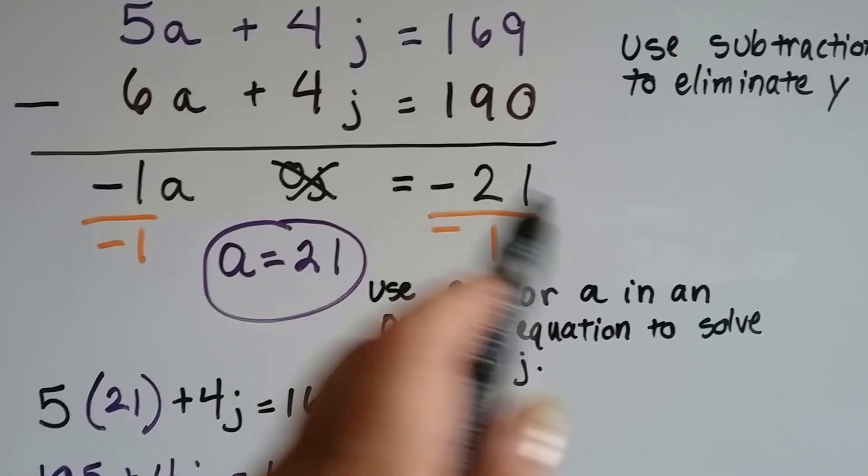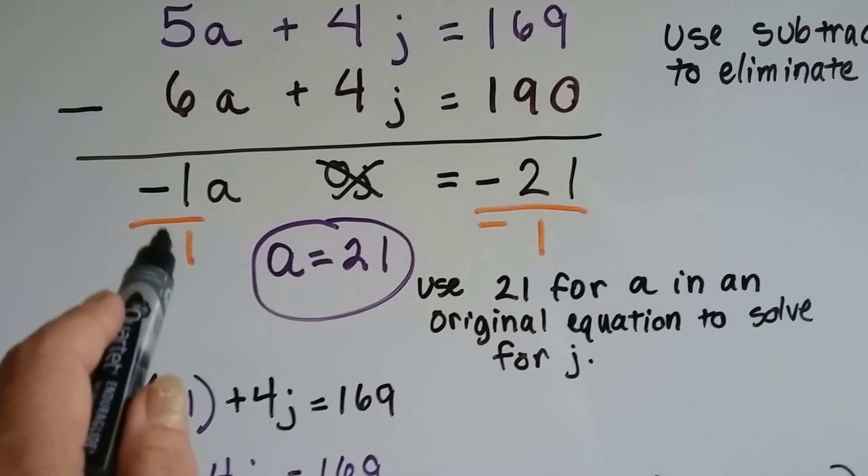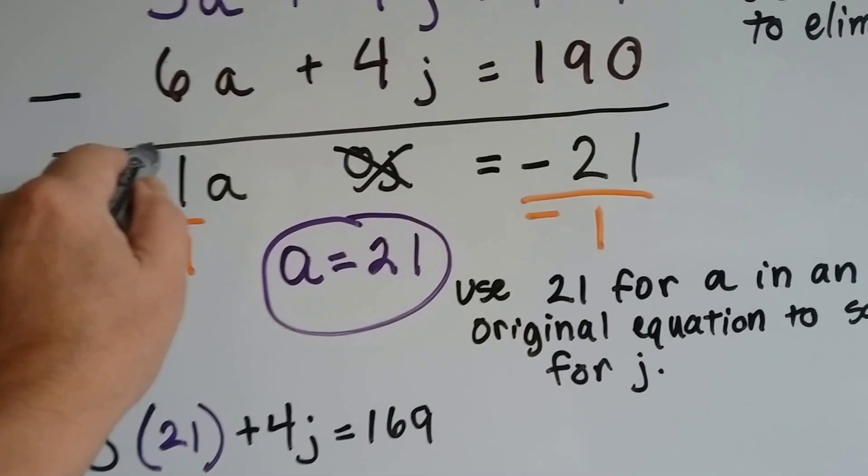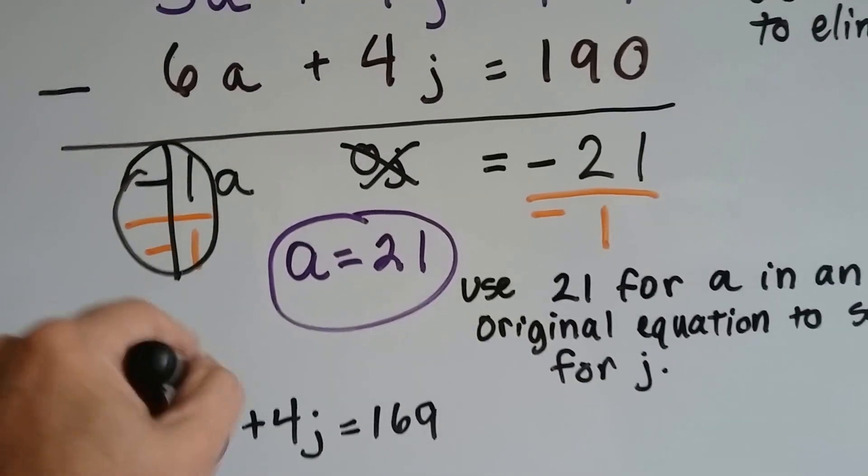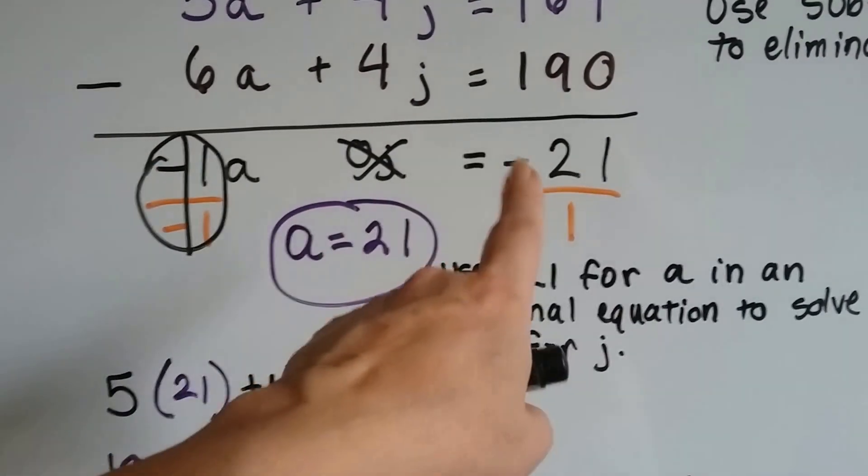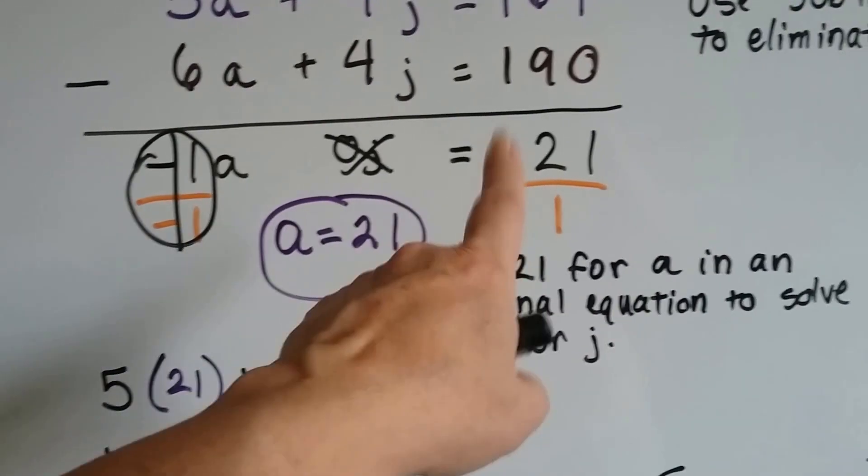Now, as we always do, we need to divide each side by this negative 1 to get the A by itself. And we do. And we get our friend the invisible 1. And because they're both negative, it becomes a positive. And negative 21 divided by negative 1 is positive 21 because it's two negatives.